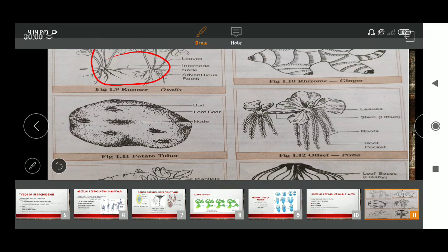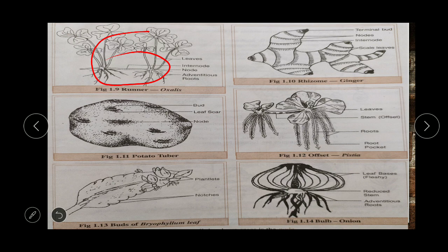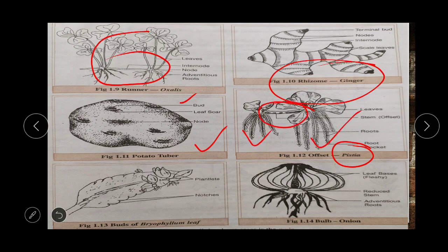Looking at the diagram — runner in Oxalis: two different Oxalis plants are attached to each other through a runner, giving them the ability to produce new plants. Rhizome in ginger: the rhizome has the ability to give rise to new plants. Potato tubers are also called eyes of the tuber or buds of potato — from that point, new plants arise. Offset in Pistia and water hyacinth — the offset attaches two different plants and new plants can be produced from it.